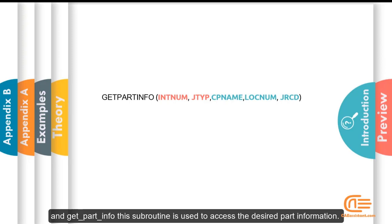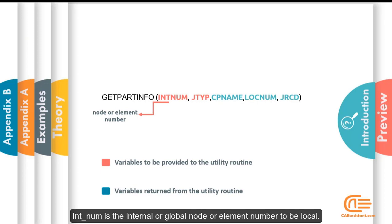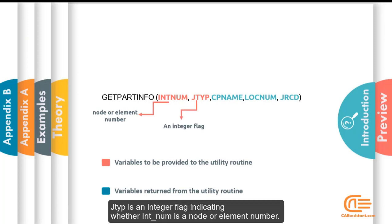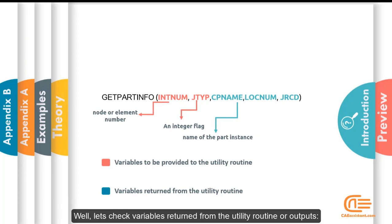And getpartinfo, this subroutine is used to access the desired part information. The input of this subroutine includes the following. INTNUM is the internal or global node or element number to be local. JTYP is an integer flag indicating whether INTNUM is a node or element number. Set JTYP as 0 to lookup a node number and set JTYP to 1 to lookup an element number.